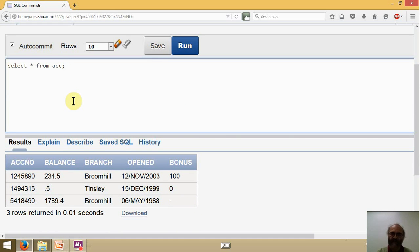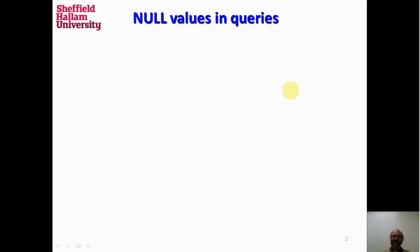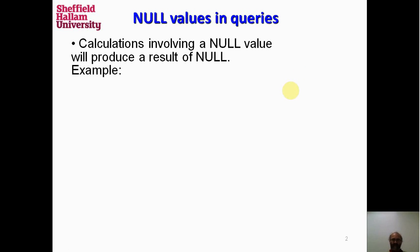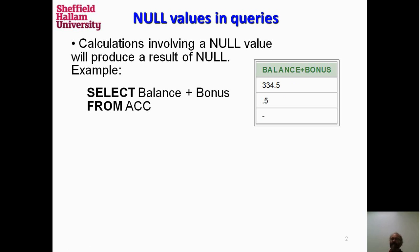Null values have a peculiar effect. When we carry out a calculation, balance plus bonus, for example, the null value can't be used to calculate. Because how much is a balance plus an unknown figure? Well, a bonus is null, so the result is an unknown figure. A null value. In a calculation, if there are null values, we'll get null.